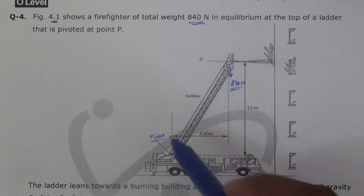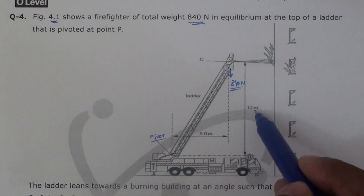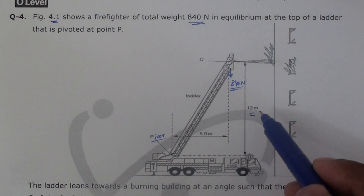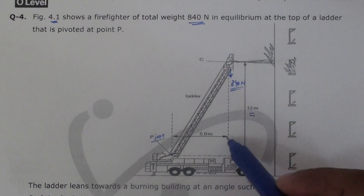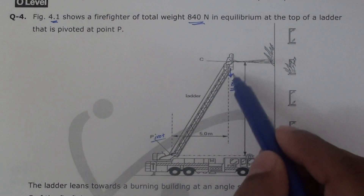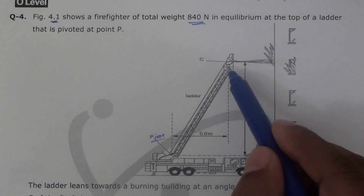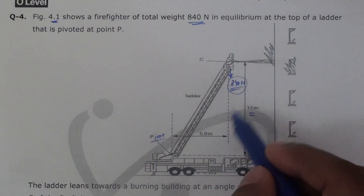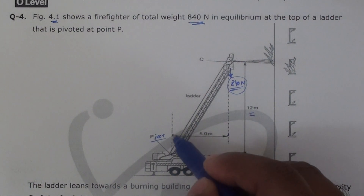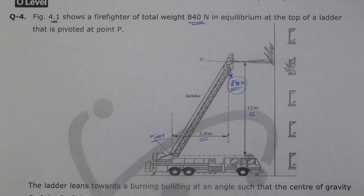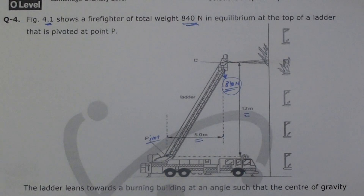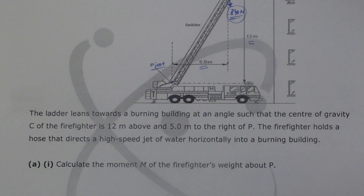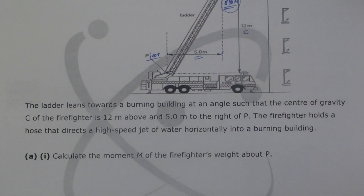The distance from point C to the pivot P is 12 meters vertically, and the horizontal distance from the point at which the firefighter applies his weight to the pivot is 5 meters. This information is very important for solving this question.